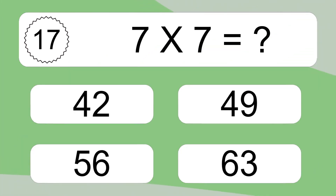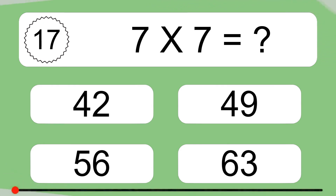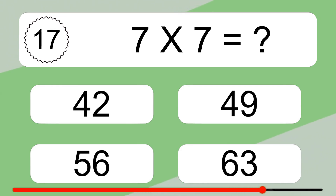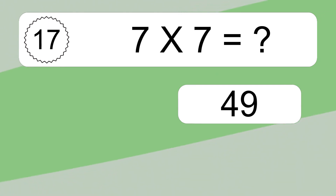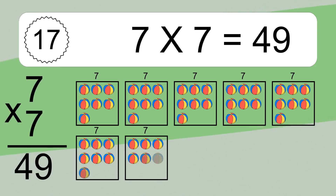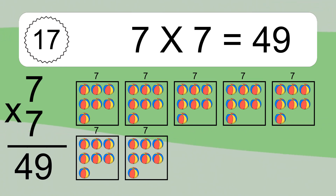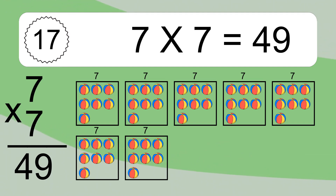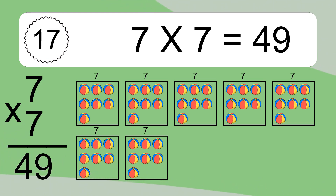7 times 7 equals what? 7 times 7 equals 49. We have 7 boxes, and each box has 7 colorful balls inside. If you count all the balls in all the boxes together, you will have 7 times 7 balls. This equals 49 balls.